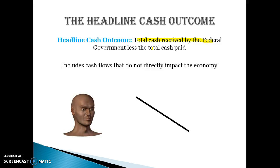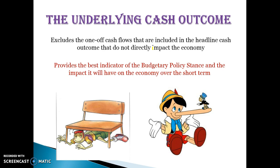I'll give you some examples of things that will get excluded when we're looking at the underlying cash outcome. The underlying cash outcome excludes one-off cash flows that are included in the headline cash outcome but do not directly impact the economy. If there are certain things that the government collects money from or pays that don't directly affect the economy, or don't really show the strength of the economy at that particular point in time, we want to remove those. They don't really give us a good indication of the budgetary policy stance or what the budget will do to the economy in the short term.